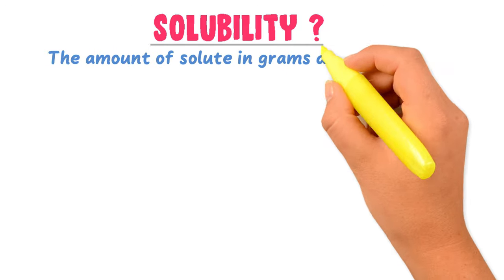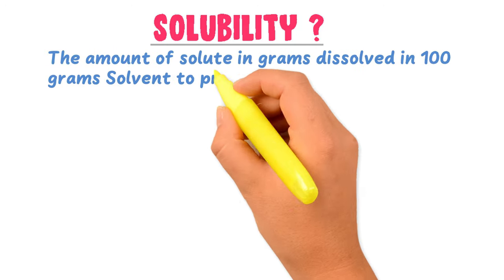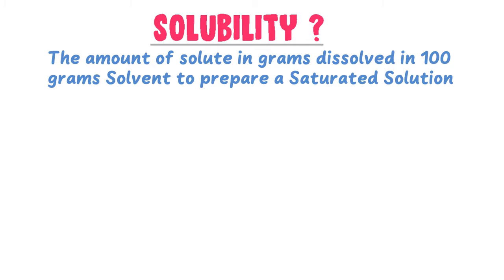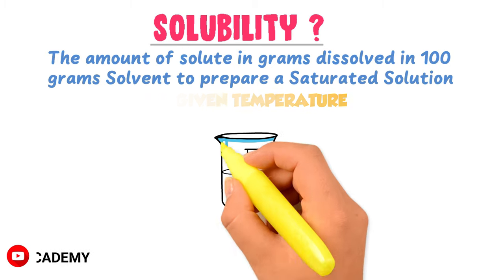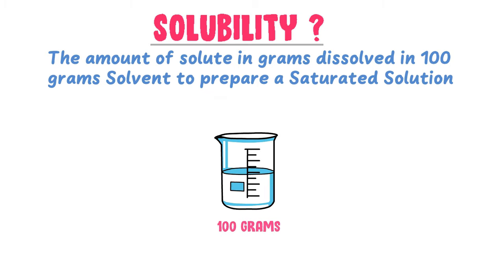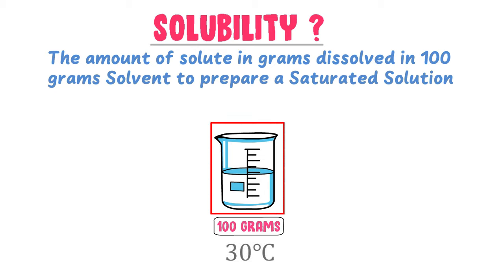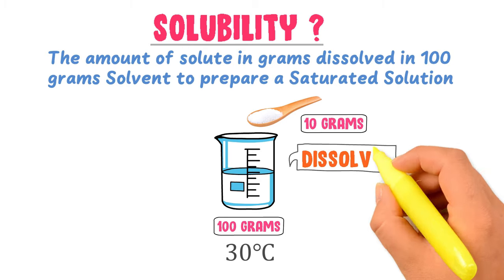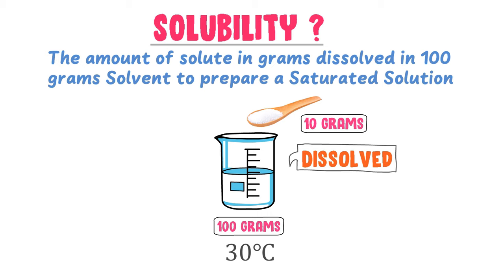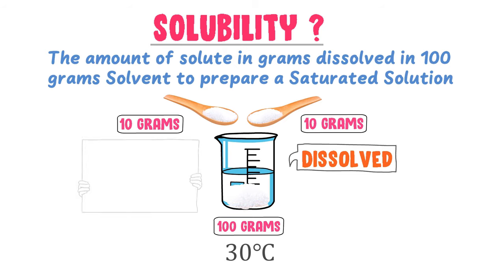The amount of solute in grams dissolved in 100 grams of the solvent to prepare a saturated solution at a given temperature is known as solubility. For example, consider 100 grams of water in this beaker at 30 degrees centigrade. Firstly, I add 10 grams of sugar and it easily dissolves in the water. Secondly, I again add 10 grams of sugar, but this time some sugar dissolved and some settled at the bottom.